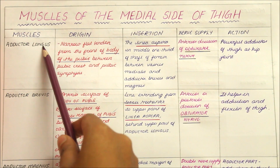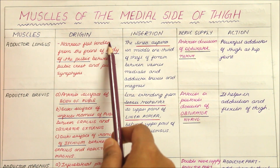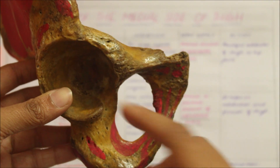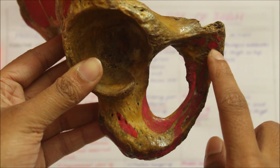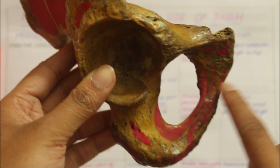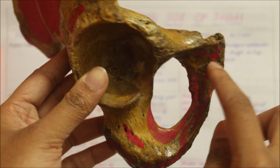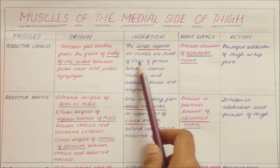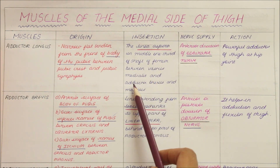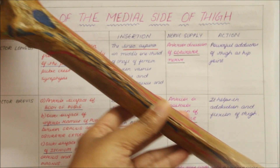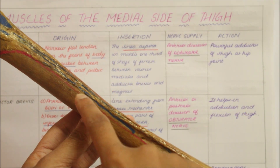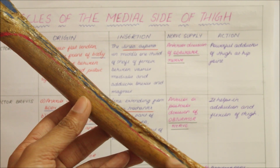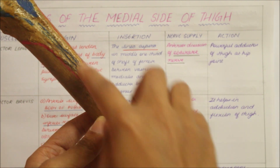Let's look at the adductor longus. It originates from a narrow flat tendon from the front of the body of the pubis, between the pubic crest and the pubic symphysis. This is the right hip bone. The adductor longus inserts into the linea aspera in the middle one third of the shaft of the femur, between the vastus medialis and the adductor brevis and adductor magnus. This is the right femur.